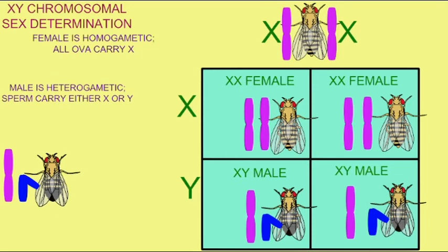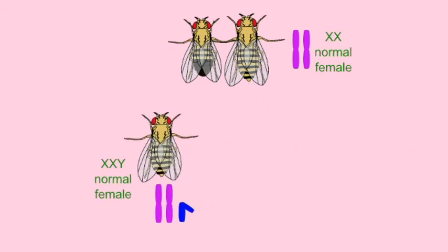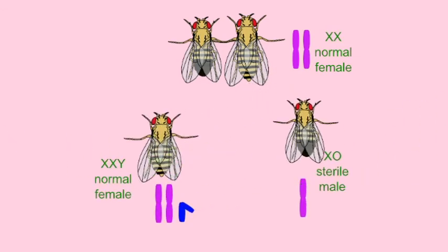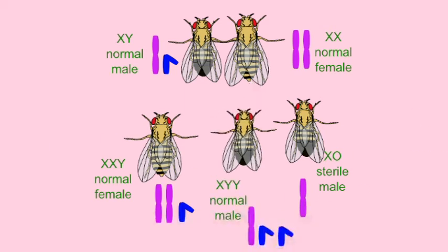It should be pointed out that there are often other aspects of gender determination. For example, in flies, the Y chromosome is required for fertility, but it is really the ratio of the sex chromosomes to the autosomes which determines gender. And so, the Y does not determine maleness the way that it does in humans.